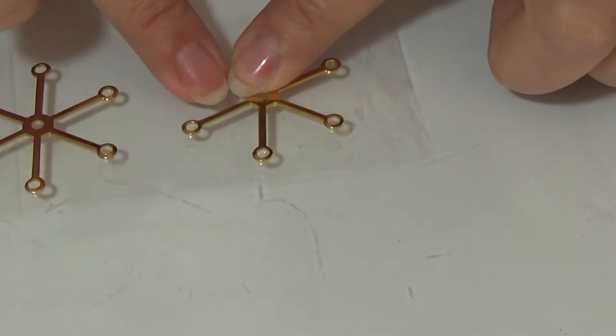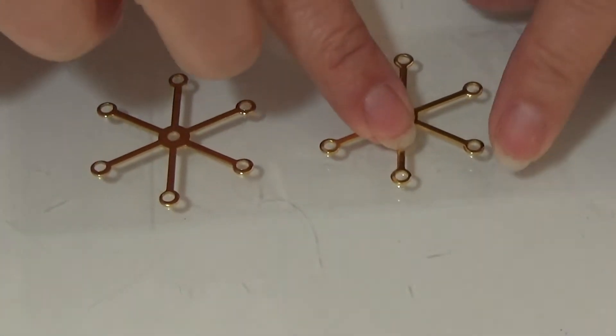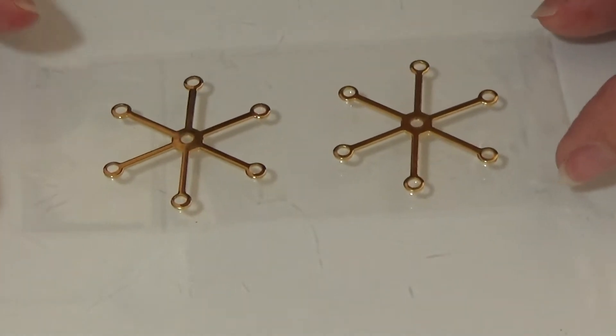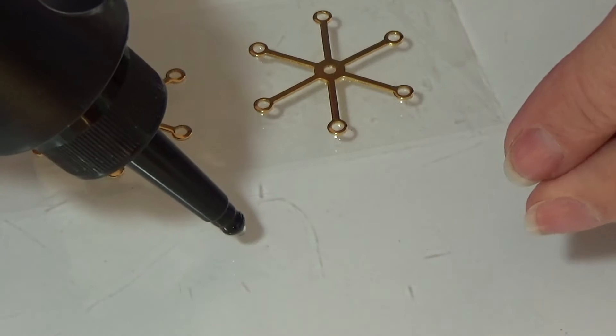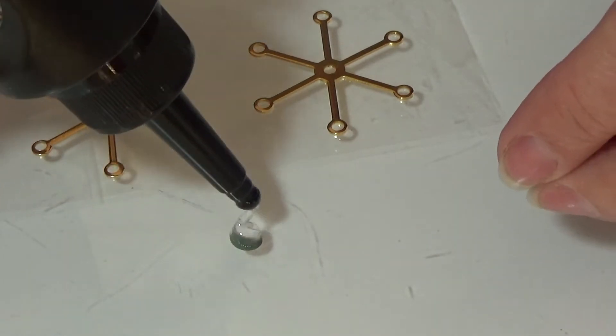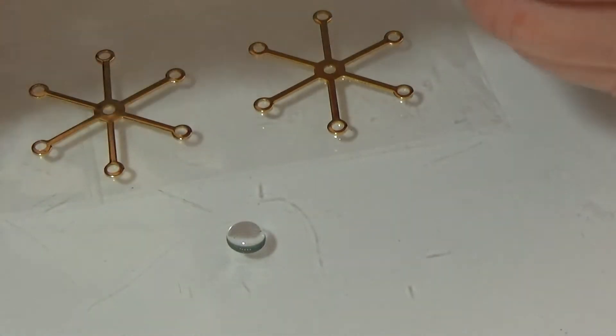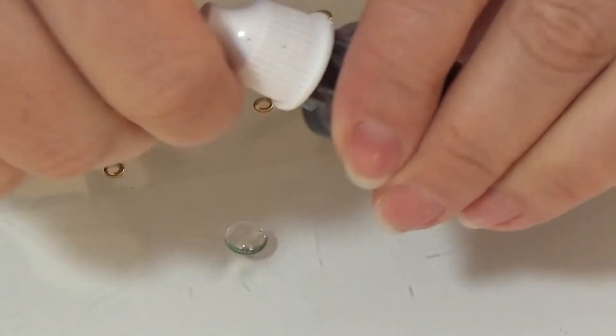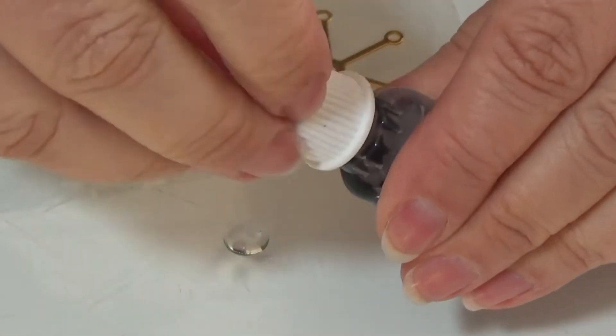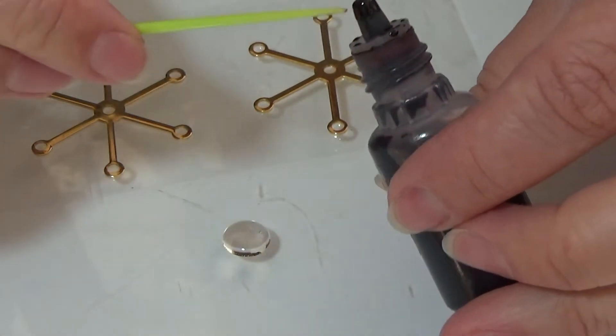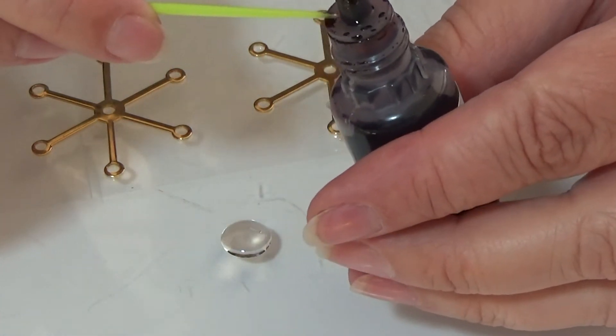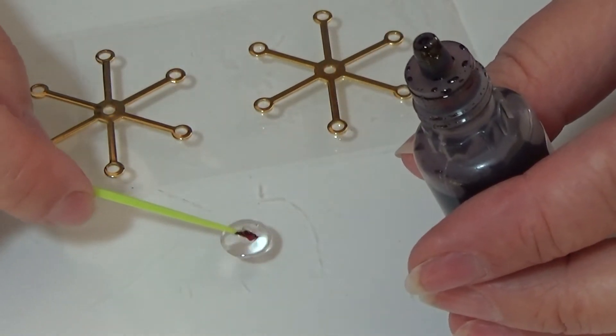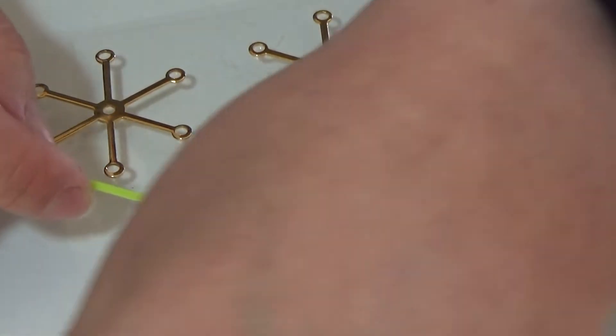Then I take some of my UV resin and I put some of it on my work surface. And then I have some red UV coloring here, resin coloring. Yes, it's a red one.